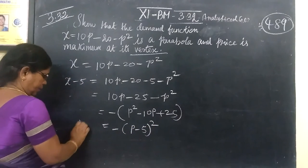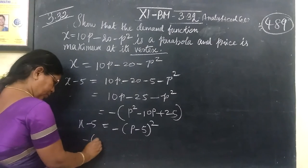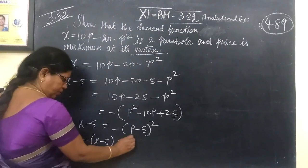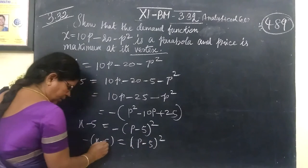This is equal to p minus 5 the whole squared, so this equals capital X.